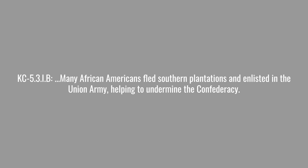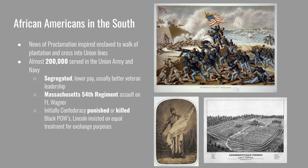The last part of this key concept says many African Americans fled southern plantations and enlisted in the Union Army, helping to undermine the Confederacy. When enslaved people in the Confederacy heard of the proclamation, many walked off their plantations straight into Union lines. Free African Americans in the North also took the Emancipation Proclamation as a sign of greater things to come for equality and freedom. It inspired both groups to volunteer and join the Union Army and Navy, totaling 200,000.